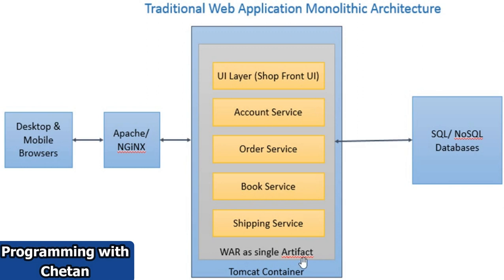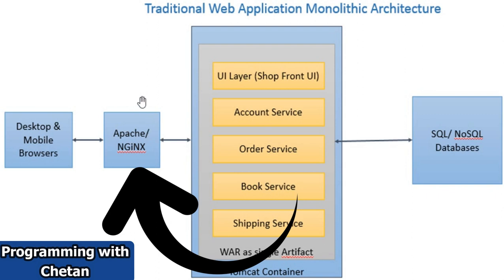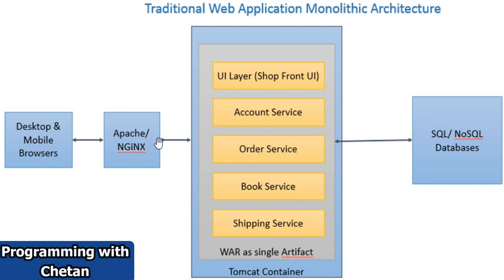In a monolithic system, all desired components of the application are in a single system. The client sends a request, which goes to an application gateway — here you can see Apache or Nginx as the type of application gateway. It directs the request coming from the client to the application, and our application uses a single database.